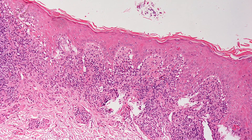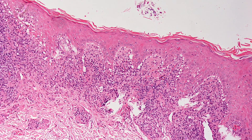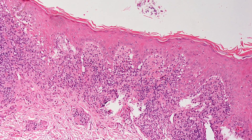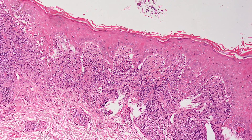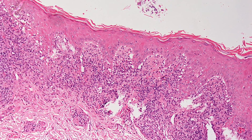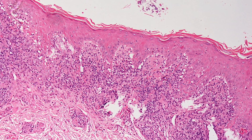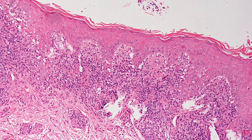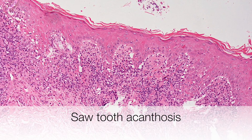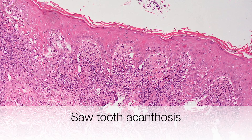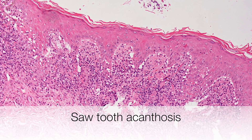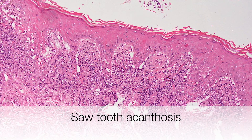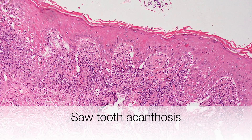The low power view of the skin biopsy shows the characteristic band-like chronic inflammatory infiltrate and irregular acanthosis with sharp pointed rete ridges. This is a nice example of the sawtooth acanthosis in lichen planus.